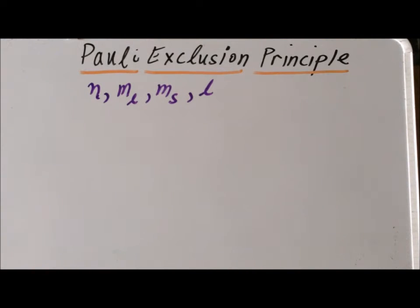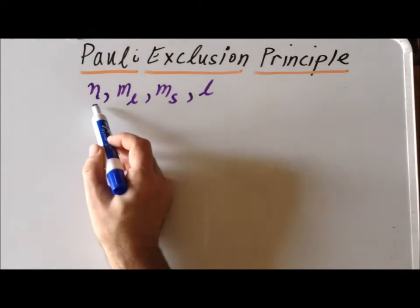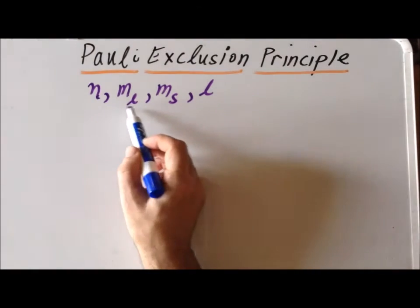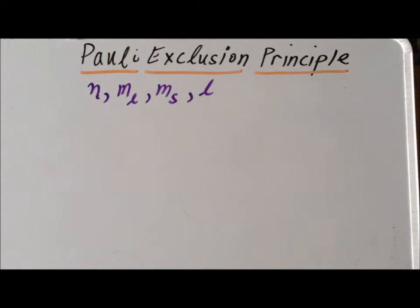Another way to phrase the principle is that for the set of four quantum numbers — where n is the principal quantum number, m_l is the magnetic quantum number and also the z component of the orbital angular momentum projected onto the z axis, m_s which is the projection of the spin angular momentum onto the z axis, and l the orbital angular momentum quantum number — those four numbers cannot be the same for any two electrons in the same atom.